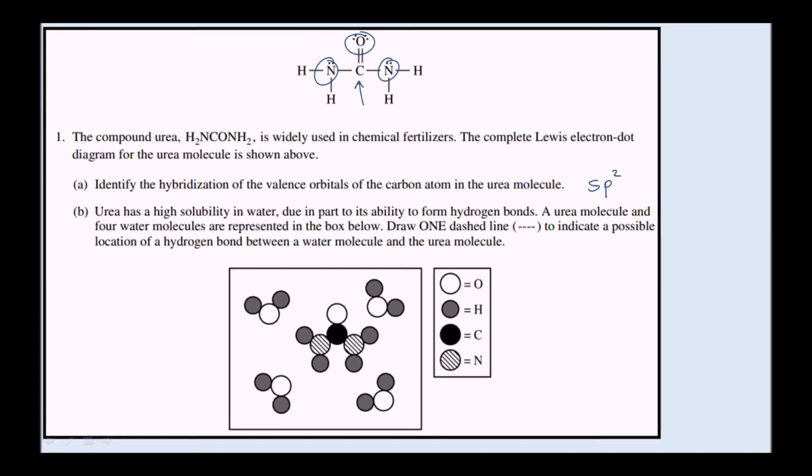Part B: Urea has a high solubility in water due in part to its ability to form hydrogen bonds. A urea molecule and four water molecules are represented in the box below. Draw one dashed line to indicate a possible location of a hydrogen bond between a water molecule and the urea molecule.